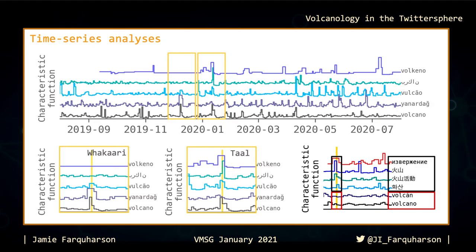A final note on the time series analyses is that events that gain the most traction are tragedies involving the loss of human life, or instances where we see temporarily clustered — although geographically discrete — volcanic eruptions.